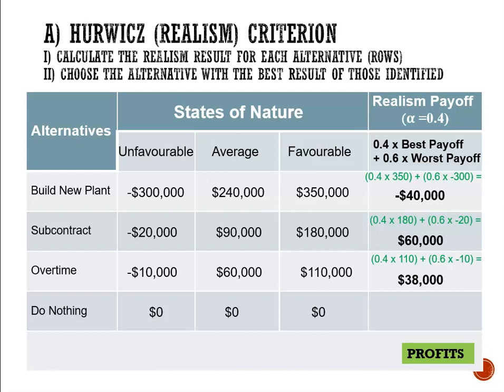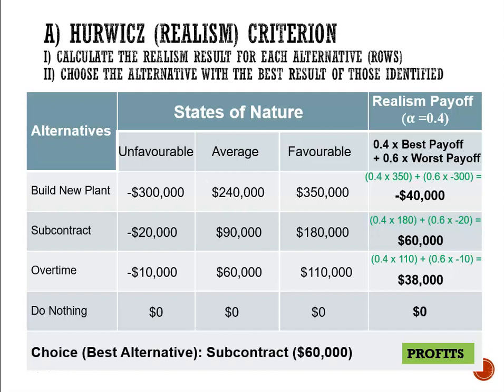For do nothing, it's zero across the board, so that one will be zero. We now have a single profit for each option: building a new plant at negative $40,000 representing a loss, subcontracting at $60,000, overtime at $38,000, or do nothing with no profit and no loss. The highest profit is $60,000, so the choice on the Hurwitz would be to subcontract.